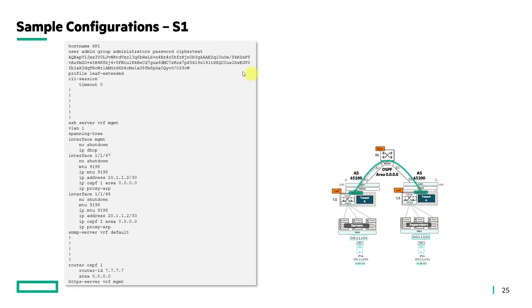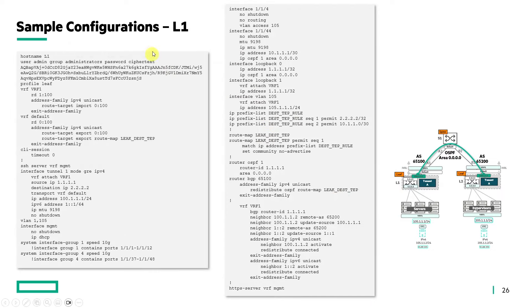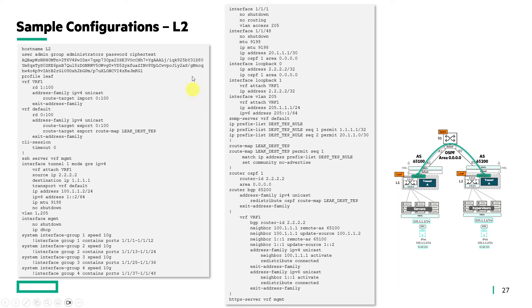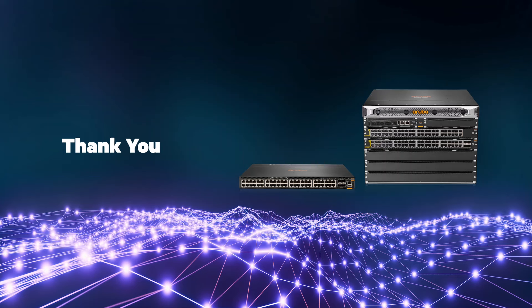These next three slides show the sample configurations used in the demonstration as a reference — SPINE1's configuration, LEAF1's configuration, and finally LEAF2's configuration. With that, we've come to the end of the presentation. Thank you for attending the session, and I hope this helps you understand how BGP over GRE tunnels with IVRL helps with data center deployments.